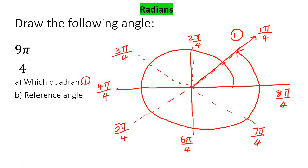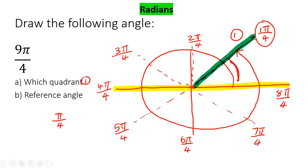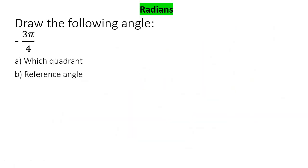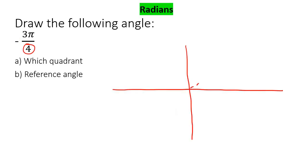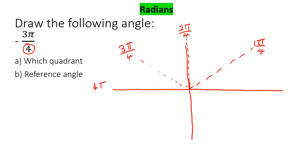The reference angle is always measured from the x-axis to the terminal side. So that's going to be π/4, and that is your reference angle. This next example is pretty cool because it's got a negative. We're still going to break things up into four parts: 1π/4, 2π/4, 3π/4, 4π/4, 5π/4, 6π/4, 7π/4, and 8π/4 back to the start at 0.